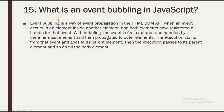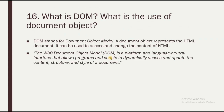Question 15: What is event bubbling in JavaScript? Event bubbling is a way of event propagation in the HTML DOM API. When an event occurs in an element inside another element, and both elements have registered a handler for that event, with bubbling the event is first captured and handled by the innermost element and then propagated to outer elements. The execution starts from that element and goes up to its parent, and so on until the body element.